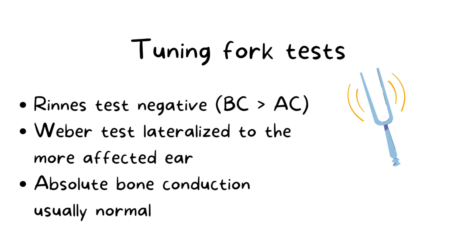In performing tuning fork tests, the results vary with stapedial and cochlear type of otosclerosis, because in stapedial type we have conductive hearing loss whereas in cochlear type we have sensorineural hearing loss. Considering stapedial type being the most common, we discuss the findings in stapedial type here. Rinne's test is negative, which means bone conduction is better than air conduction in the affected ear. Weber test is lateralized to the more affected ear and absolute bone conduction is usually normal, as it is usually conductive hearing loss. The results can be opposite in cochlear type where sensorineural hearing loss occurs.